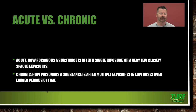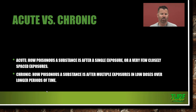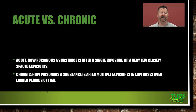Acute versus chronic. Acute is how poisonous a substance is after a single exposure or a very few closely spaced exposures. You applied a chemical one time and got really sick or ill from it — that is an acute exposure.